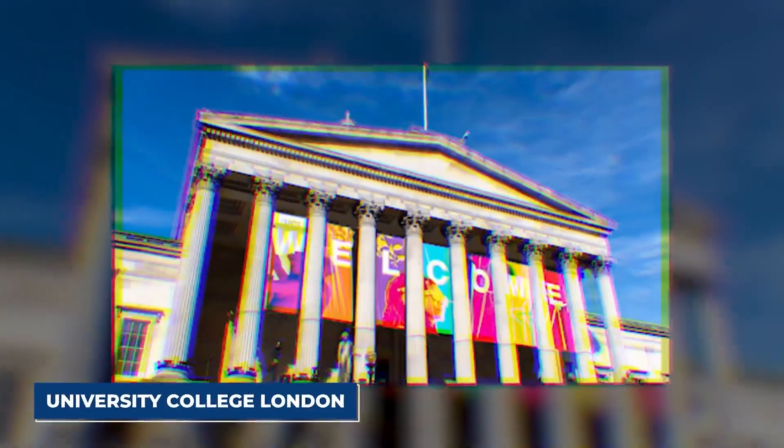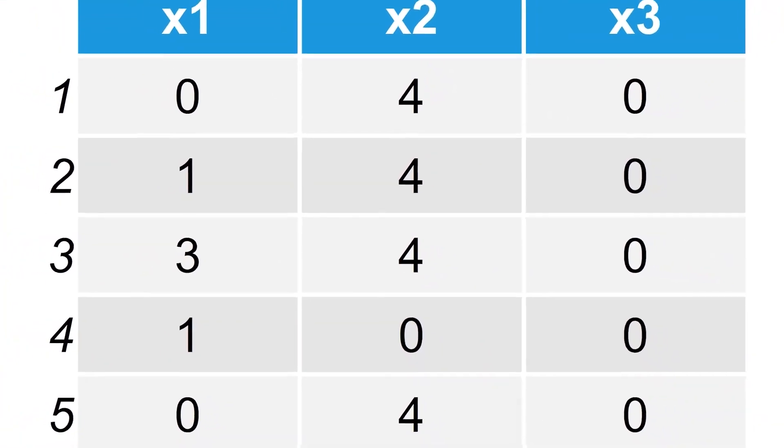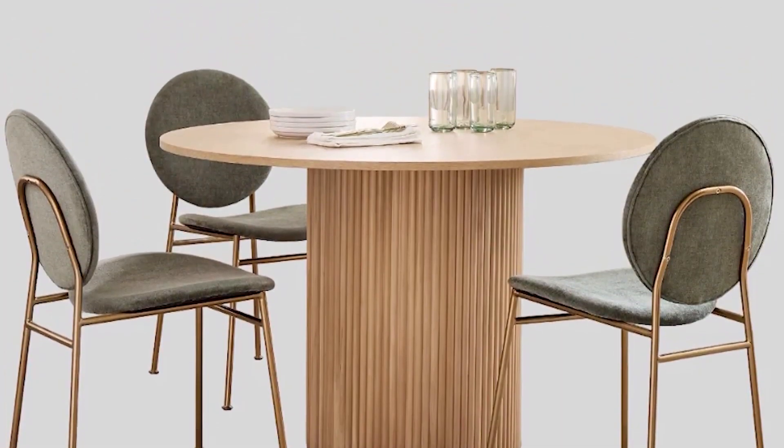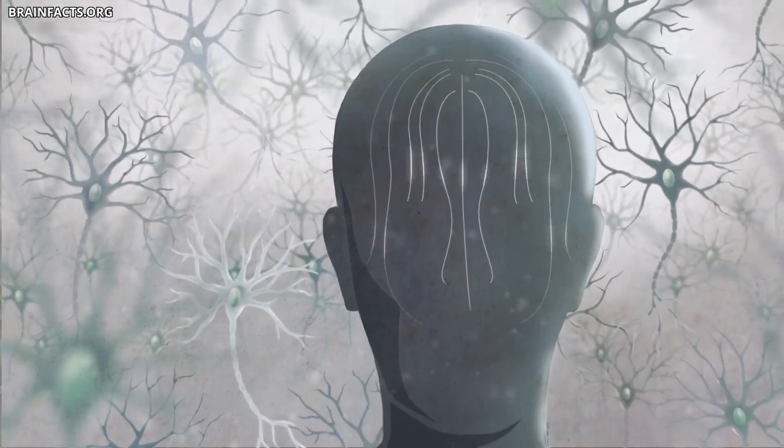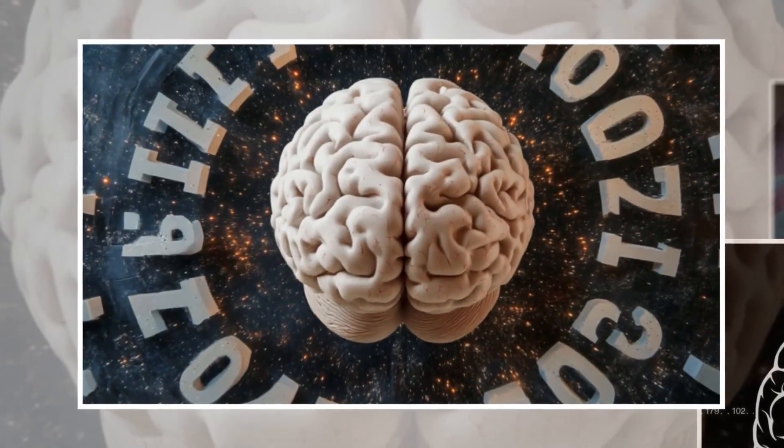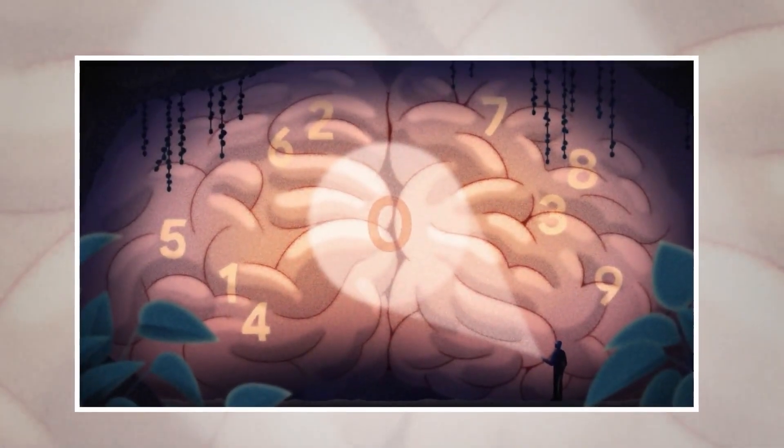As Benji Barnett, a researcher studying consciousness at University College London, explains, non-zero numbers easily map onto objects we can count, such as three chairs with four legs each at a table. With zero, however, the mind has to take an additional step. It must acknowledge the absence of objects and assign a numerical value to that nothingness.